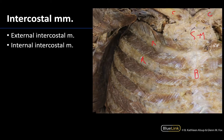The external intercostal muscle is going to be the most superficial, but in this particular dissection in a few areas we've actually gone a little bit deeper so you can see the internal intercostals. For the external intercostal, these are going to have muscle fibers that run inferomedially — as you can see here from the rib above to the rib below — and you can see that also here.